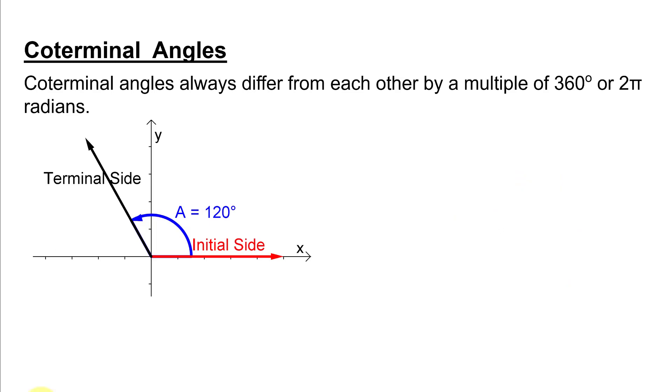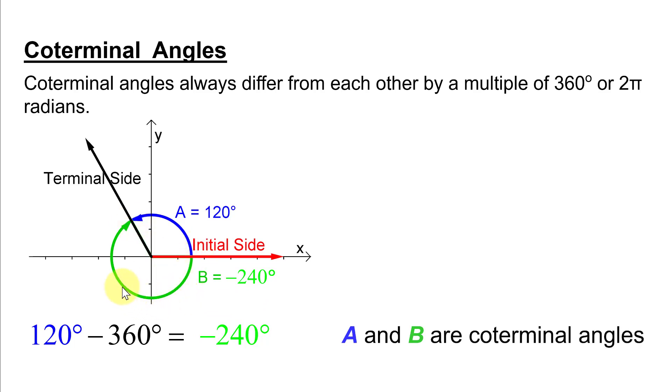Now, let's subtract 360 degrees and we'll get negative 240 degrees. And how do we graph a negative angle? Remember, that is a clockwise rotation from the initial side to the terminal side. So here's your angle negative 240 graphed right here. And negative 240 and 120 are coterminal angles.